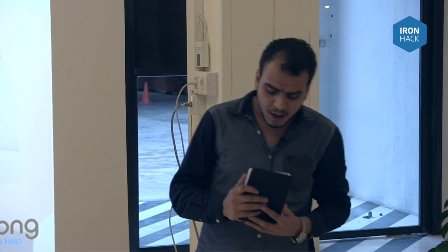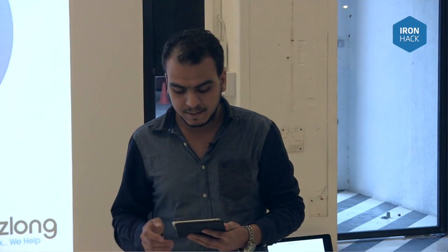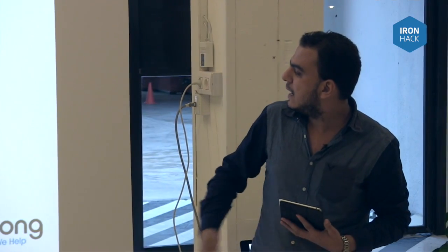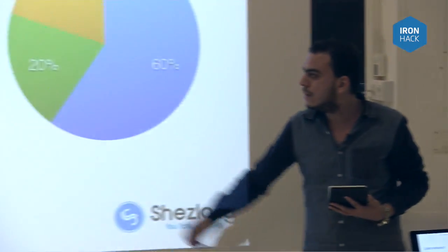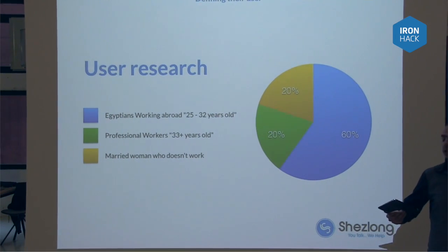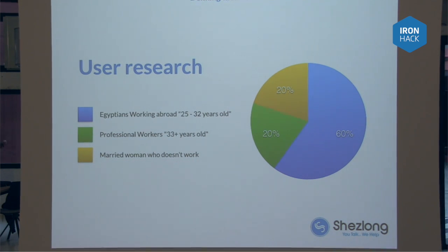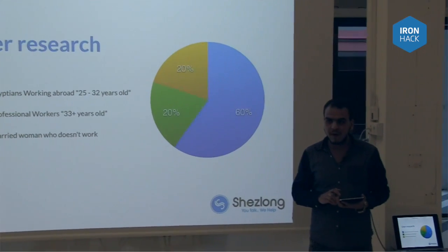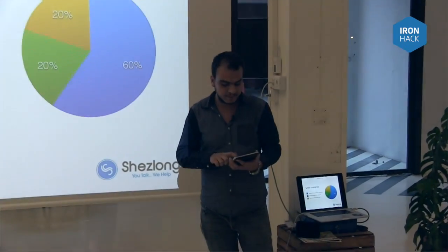My first step was to identify their users. My approach was to reach out to the therapists, because they take notes and have data on past users. I did one individual interview with a therapist and a survey with all the therapists. Finally, I found out who their users are: mainly 60% Egyptians working abroad, 20% professional workers, and 20% married women who don't work.